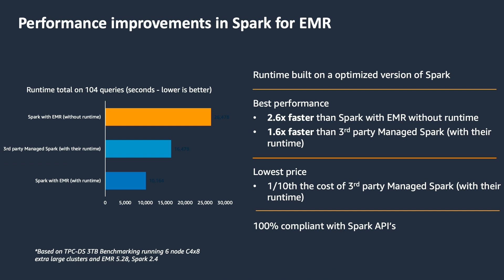When it comes to performance, starting with release 5.28, Amazon EMR makes available a performance-optimized runtime for Apache Spark that is active by default on Amazon EMR clusters. The EMR runtime for Spark is up to 32 times faster than EMR version 5.16, with 100% API compatibility with open source Spark. Based on a TPC-DS benchmarking test performed on a six-node cluster, EMR performed 2.6 times faster than Spark on EMR without the runtime, and 1.6 times faster than third-party managed Spark using their runtime — all at one-tenth the cost.